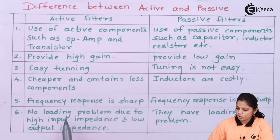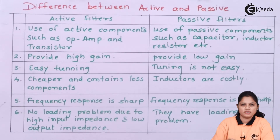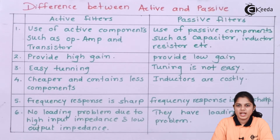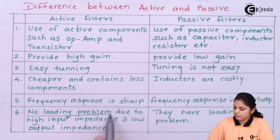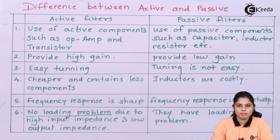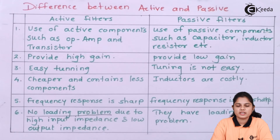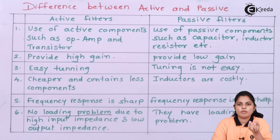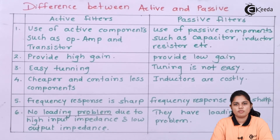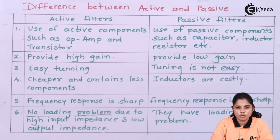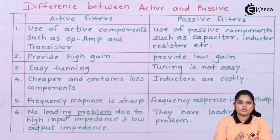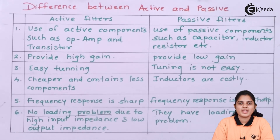Sixth difference: in active filters there is no loading problem due to high input impedance and low output impedance. The ideal characteristics match with active filters because op-amps have large input impedance and low output impedance. But in passive filters there is a loading problem because no active component is used — components like inductors, resistors, and capacitors consume a large amount of power, add noise into the signal, and produce a loading effect.